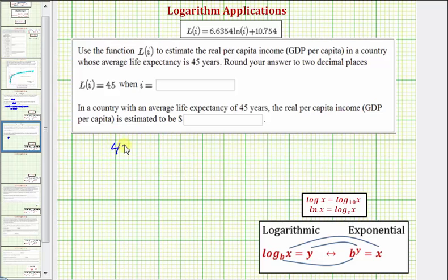This will give us the equation 45 = 6.6354 ln(I) + 10.754. So to solve for I, we want to isolate the natural log, then write the log equation as an exponential equation. This will get a little messy, so let's do this on the next slide.